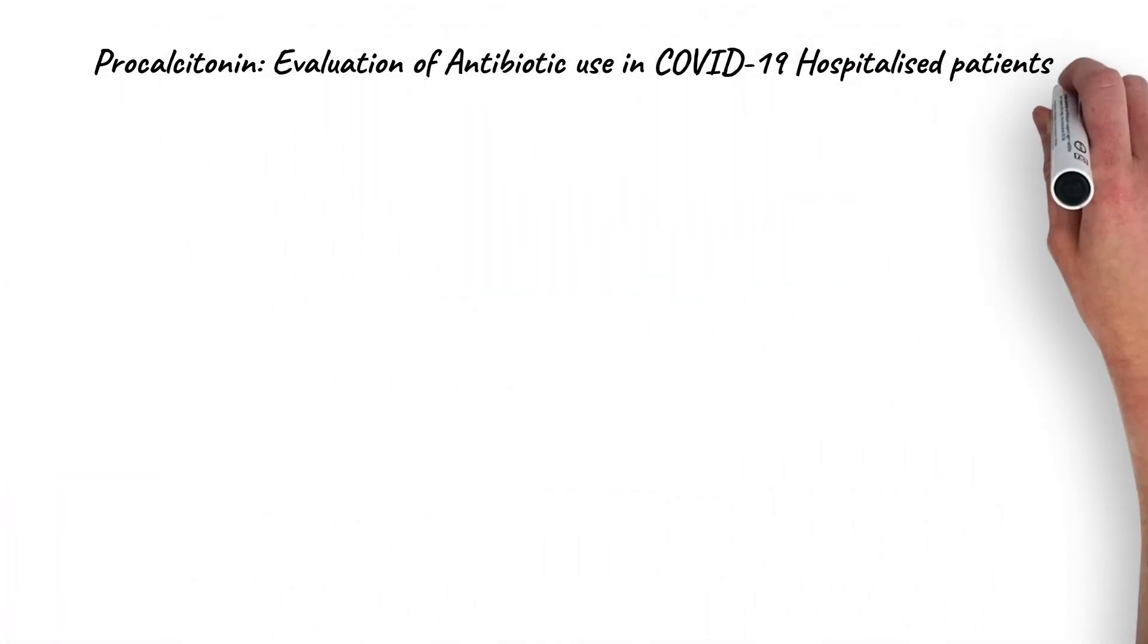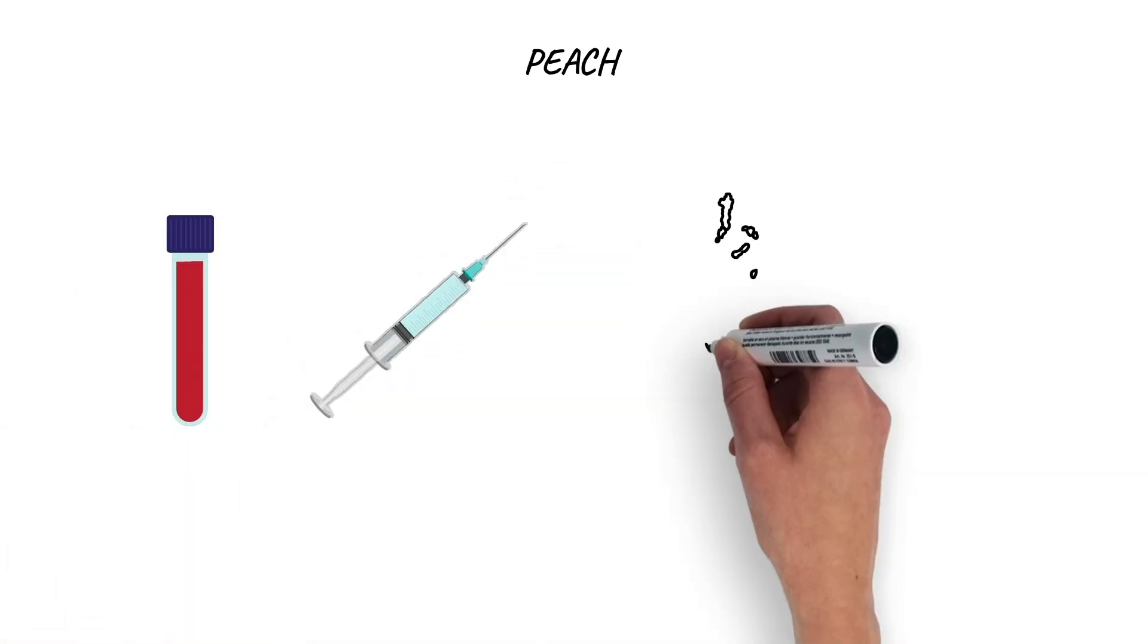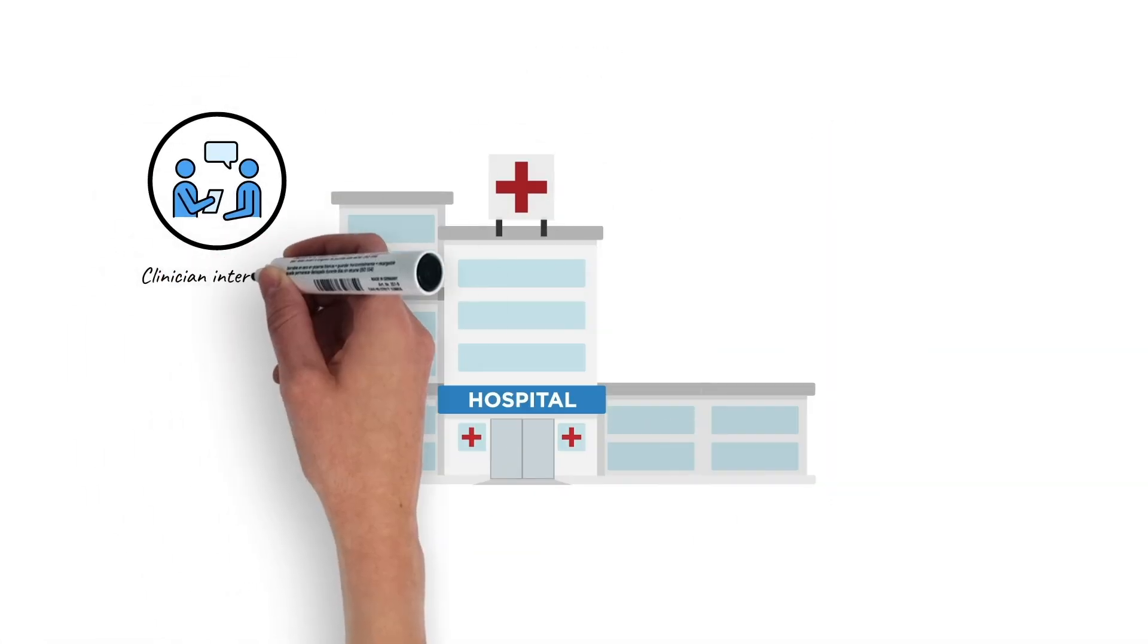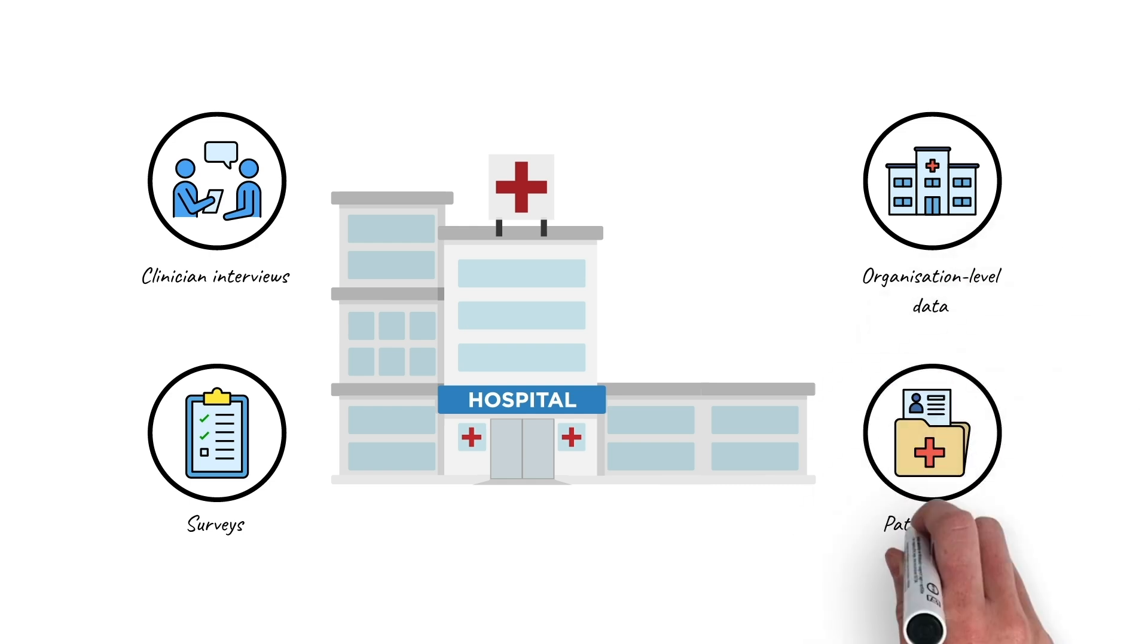The PEACH study investigated the relationship between PCT use and antibiotic prescribing in hospitals in England and Wales during the first wave of the pandemic. This study analyzed qualitative and quantitative data sources.